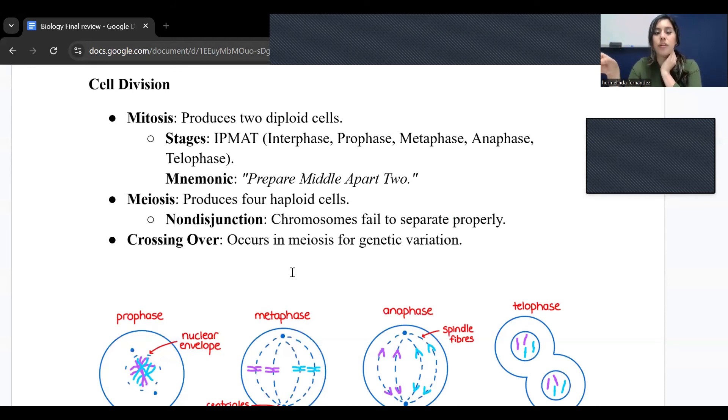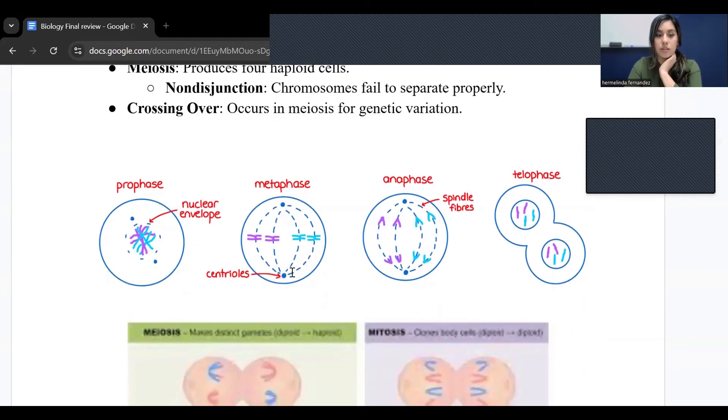Crossing over occurs in meiosis for genetic variation.